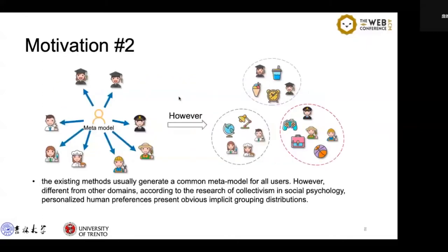Second, existing methods rarely generate a common meta-model for all users. However, different from other domains, according to research on collective wisdom in social psychology, human preferences present otherwise implicit group distributions.